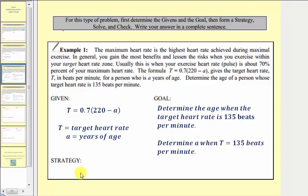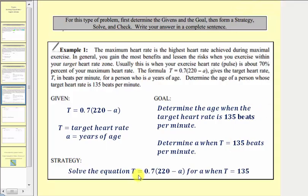Next is our strategy. Our strategy is going to be to solve our equation for A when T equals 135. So again, our strategy is to solve this equation for A when T equals 135.